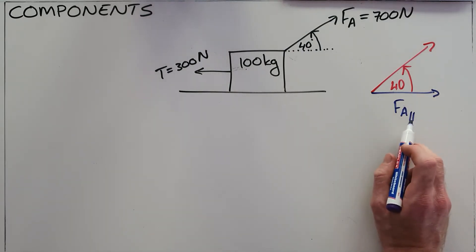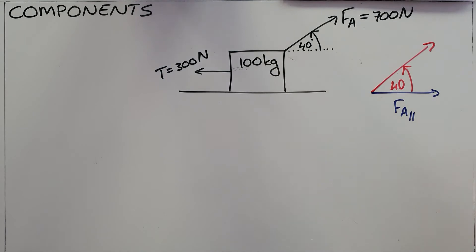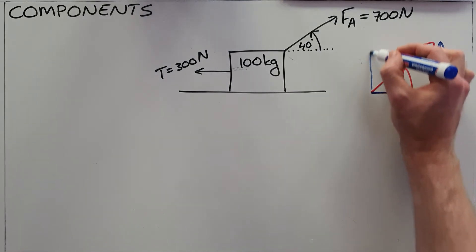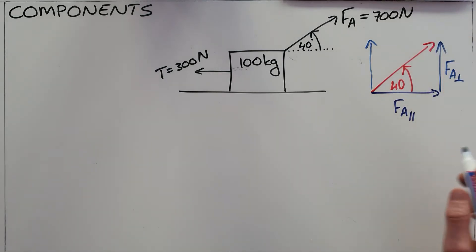Also sometimes referred to as F_A_x because it is acting in the x direction. And then the other force which we can draw is the component of the applied force that is acting vertically upwards or perpendicular to the surface, F_A perpendicular. We can also see, since we are allowed to redraw these forces wherever we want, this F_A perpendicular could also be drawn there, and F_A parallel could also be drawn there.